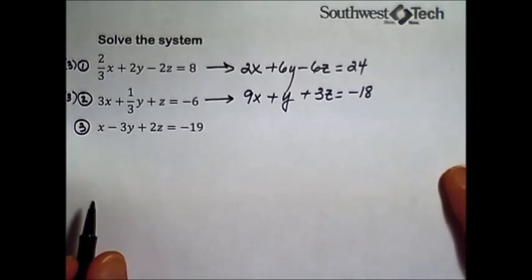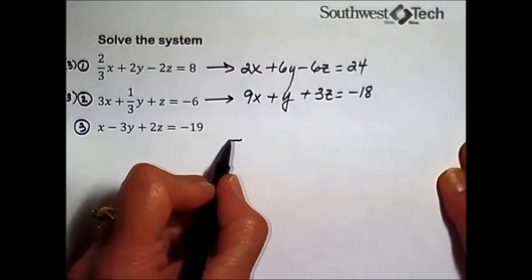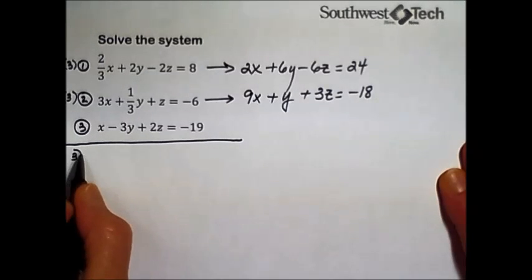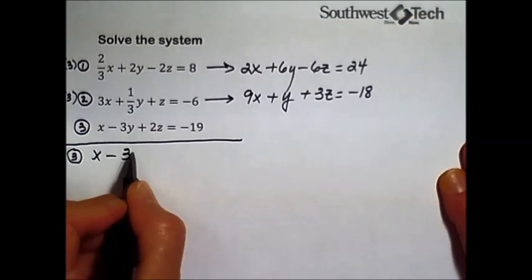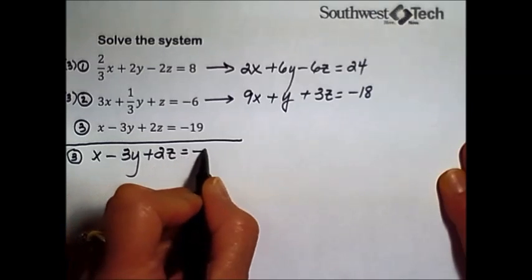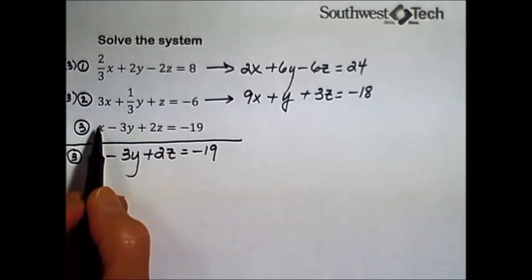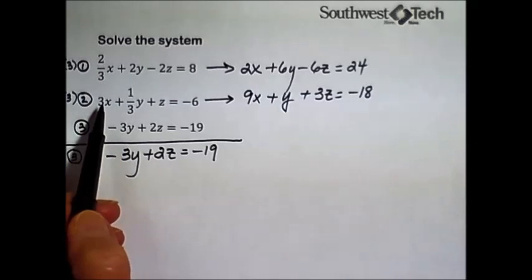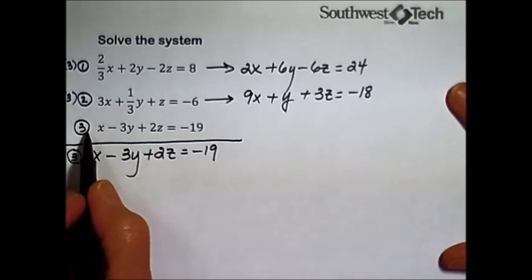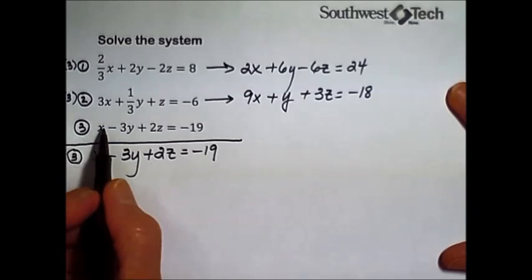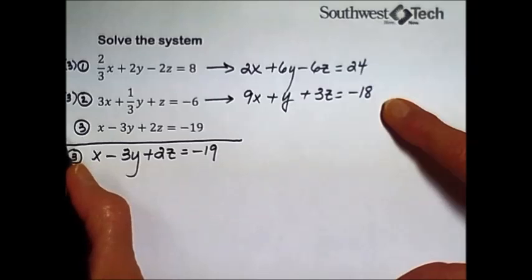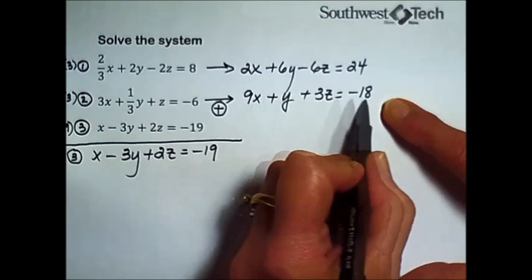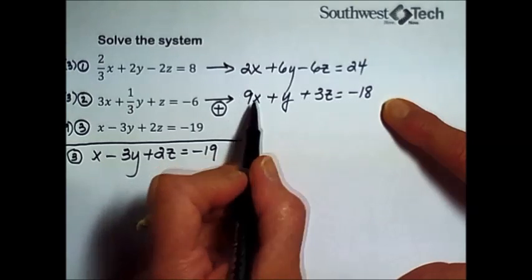And then we begin by trying to eliminate one of the variables. My goal is to have this in that triangular form. I'm actually going to leave equation number three alone with the three variables. But I'm going to use it and combine it with 1 and 2 to eliminate the x's in each of those two equations. So to start off with, I'm going to multiply everything in equation number three by negative 9.